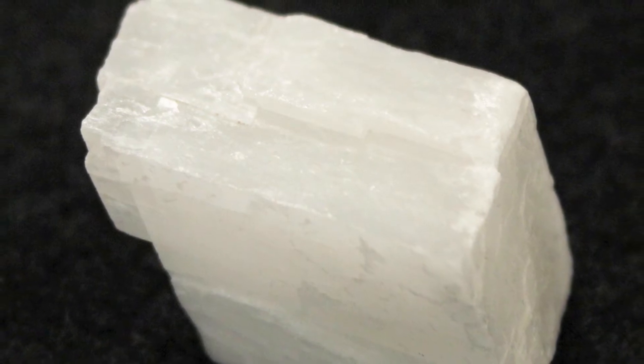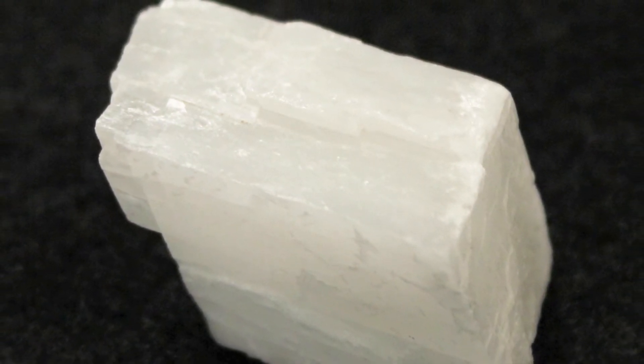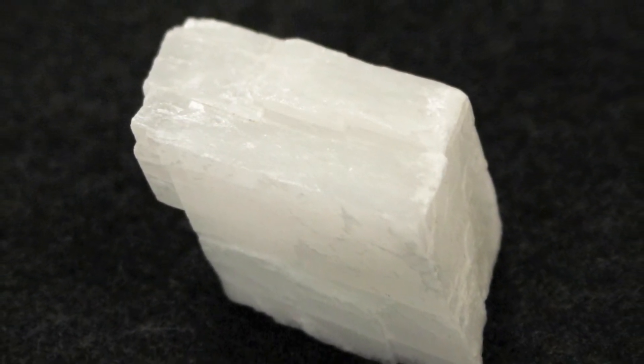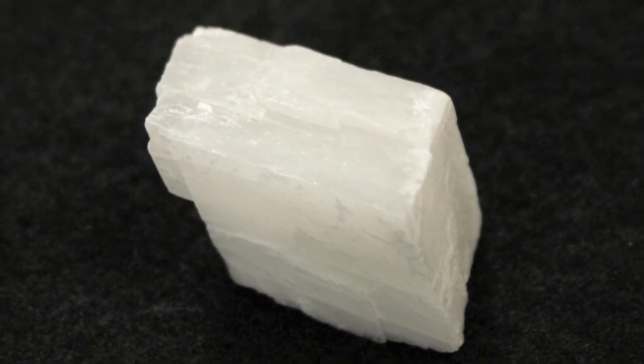These intersections give calcite a tendency to form parallelogram shapes. This is a very important feature that distinguishes calcite from another mineral on our list, halite.